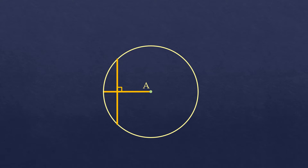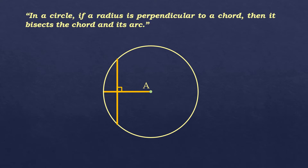Our basis is this theorem: in a circle, if a radius is perpendicular to a chord, then it bisects the chord and its arc. Actually, this is an if-and-only-if theorem, so it's also true that if the radius bisects the chord, that means they are perpendicular. It's applicable as if and only if for this theorem.